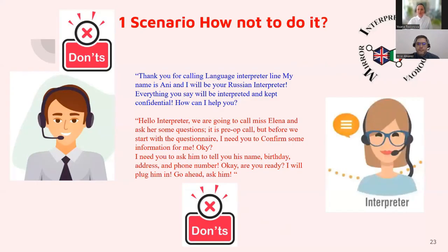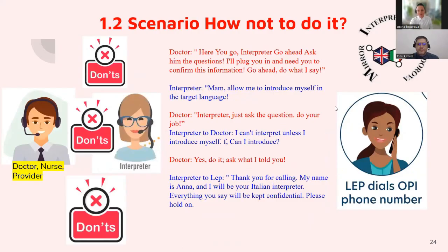[Wrong scenario - red screen] Interpreter: 'Thank you for calling the language interpreter. My name is Ani and I will be a Russian interpreter. Everything you say will be kept confidential. How can I help you?' Doctor: 'Hello, interpreter. We're going to call Ms. Elena and ask her some questions. It's a pre-op call, but before we start I need you to confirm some information. I need you to ask him to tell you his name, birthday, address, and phone number. Okay, are you ready? I will plug him in. Go ahead and ask him.' Doctor again: 'Go ahead, interpreter. Go ahead and ask him the questions. I plugged you in. I need you to confirm this information. Go ahead. Do what I say.'